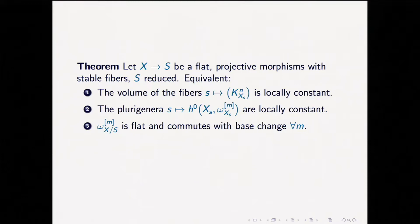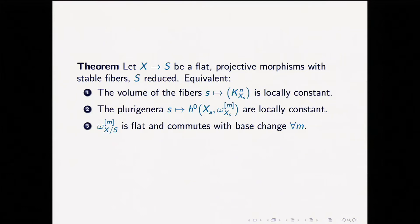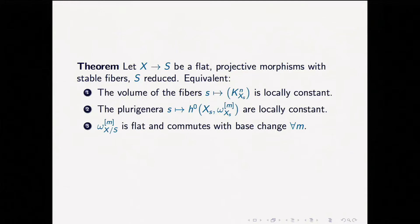There were three equivalent conditions. The first is that the volume is locally constant — this is the self-intersection of the canonical class. The second is that the plurigenera are locally constant, which is a very nice thing to have though not strictly necessary for moduli theory. The third condition concerns the relative dualizing sheaf: if you take its m-th power, since the relative dualizing sheaf need not be locally free, instead of taking the m-th power you take its double dual to make it reflexive.